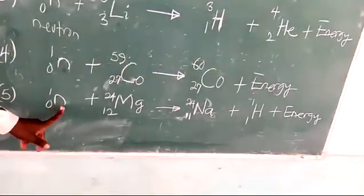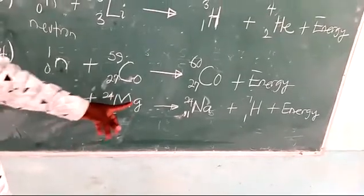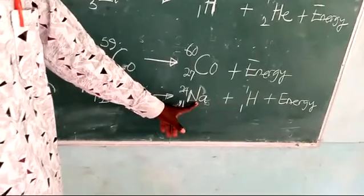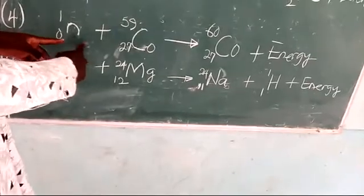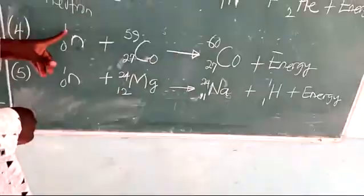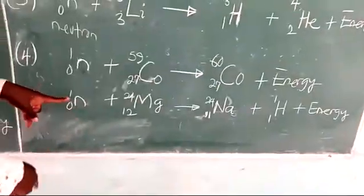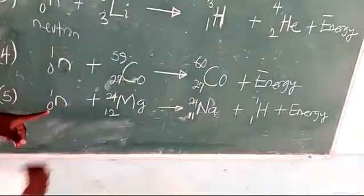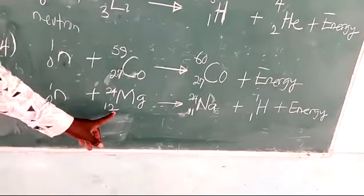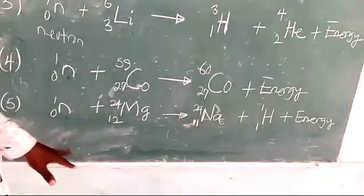Fifth, a neutron is used to bombard the atom of magnesium-24. When it is attacked, it yields sodium, a proton, and energy to the surrounding. In any case, you have to check and see that the masses and the atomic numbers are balanced. Here, 1 plus 59 will give you 60, and 0 plus 27 will give you 27. And here 1 plus 24 is 25, and that is what we have here — 24 plus 1 equals 25. The atomic numbers: this is 1 and this is 12, so 1 plus 12 is 13, and then 11 plus 1 is 12. So you have 12 on this side and 12 on this side — they are balanced.